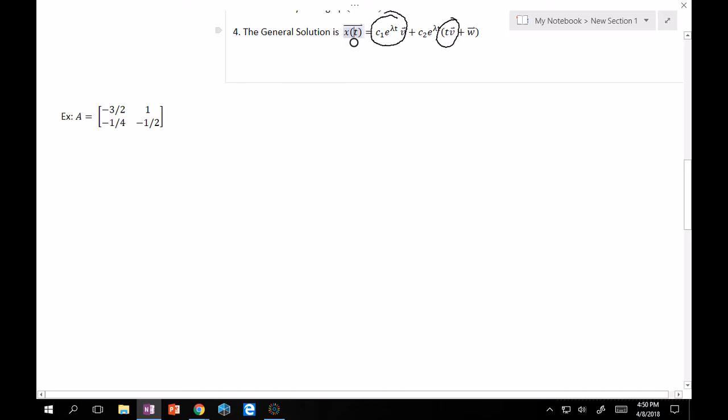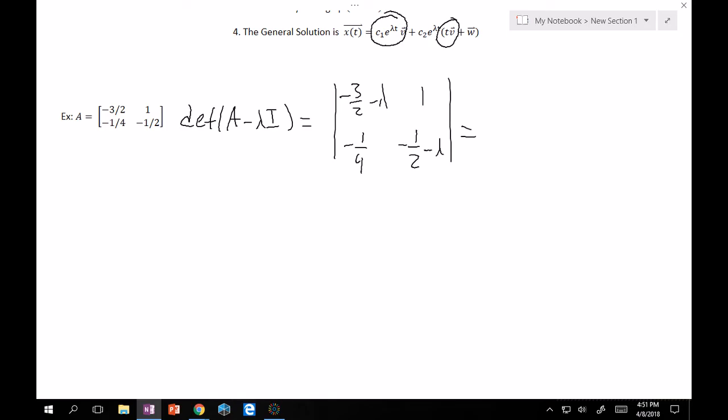Alright. So it's always given to you like this. You have your A matrix and you want to do something with it. So, first things first, determinant of A minus lambda I, right? Determinant A minus lambda I is equal to minus 3 halves minus lambda 1 minus 1 fourth minus 1 half minus lambda. This is minus 3 halves minus lambda times minus 1 half minus lambda plus 1 fourth is equal to 0. If you follow this out and simplify it, you'll get lambda squared plus 2 lambda plus 1 is equal to 0. This is exactly lambda plus 1 squared is equal to 0. Therefore, lambda is equal to minus 1 multiplicity 2.